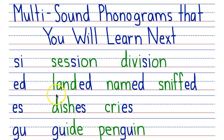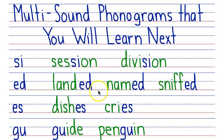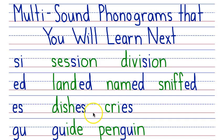ED says ED as in 'landed,' it says D as in 'named,' and it says T as in 'sniffed.' You will learn the ES phonogram. This makes two sounds: ES and Z. ES says ES as in 'dishes,' and ES says Z as in 'cries.'